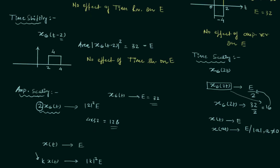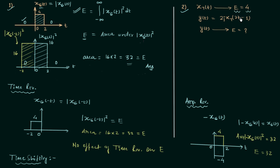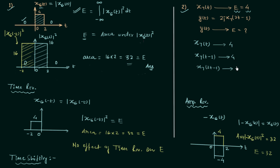Now let's move to the second problem. The signal x7(t) has energy equal to 4, and we need to find the energy of y(t) = 2j·x7(2t − 1). We apply transformations step by step. First, time shifting x7(t − 1) has no effect on energy, so energy remains 4. Then time scaling by 2 gives x7(2t − 1), and the energy is divided by 2, giving energy = 2.